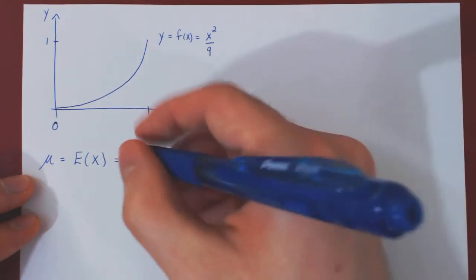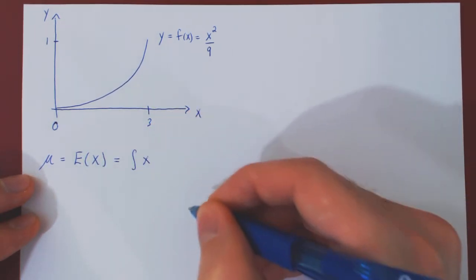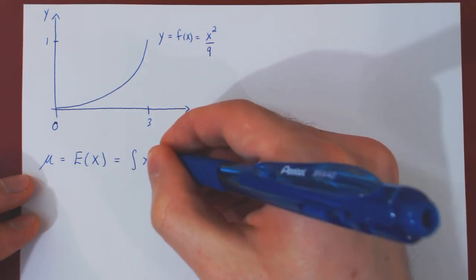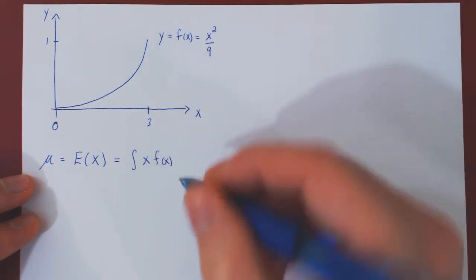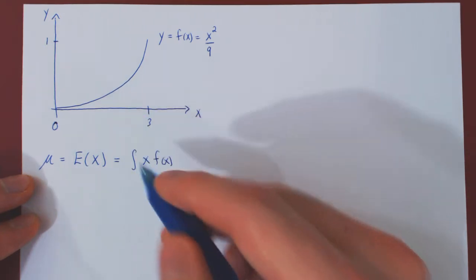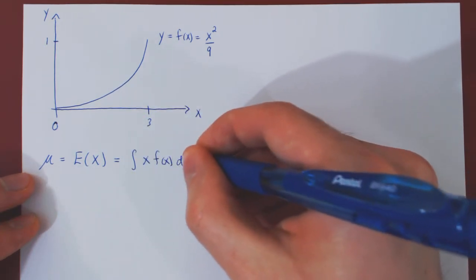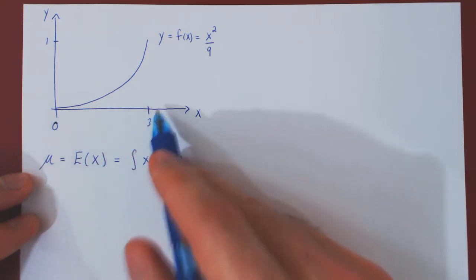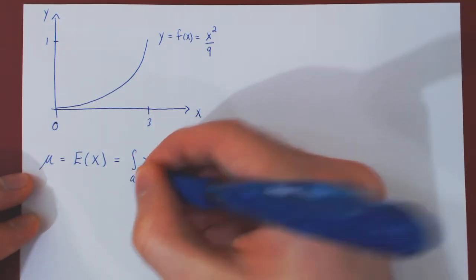This is found by integrating the value of x times its relative weight, given by the value on the probability density function. We integrate with respect to x over all possible x values, therefore from a to b.